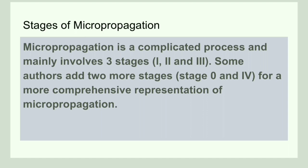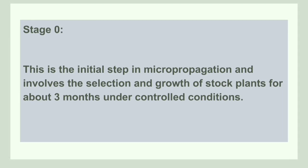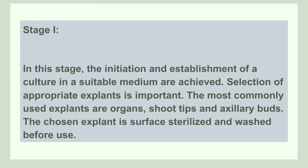Stage 0 is the initial stage of micropropagation. It involves the selection and growth of the stock plant for up to 3 months, and this is done under controlled conditions.